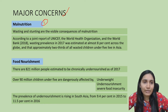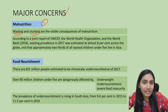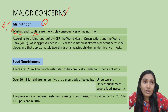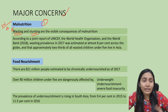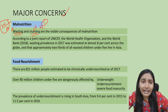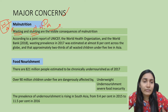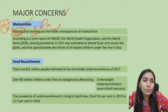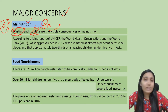Malnutrition is characterized by two components: wasting and stunting. Wasting means lesser weight according to age — when a person does not have adequate weight for their age group. Stunting means the absence of adequate height according to age. These are two important parameters with which we can measure the malnutrition level in a country.